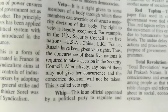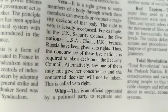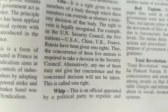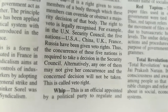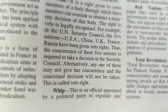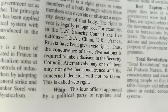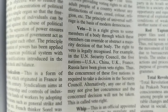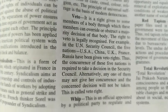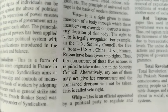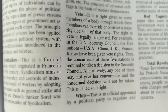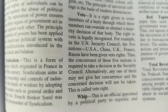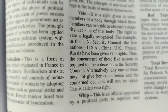The concurrence of these five nations is required to take a decision in the Security Council. Alternatively, any one of them may not give their concurrence and the concerned decision will not be taken. This is called veto right. Whip is an official appointed by a political party to regulate and monitor the behavior of its members in the legislature. The violation of the whip invites disciplinary action against the party members. Thanks, have a nice day.